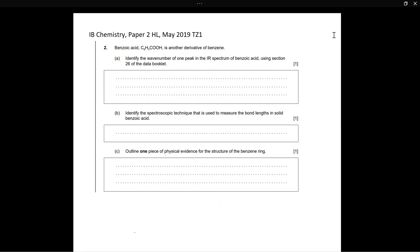So in this question, they've asked us, benzoic acid C6H5COOH is another derivative of benzene. Identify the wave number of one peak in the IR spectrum of benzoic acid using section 26 of the data booklet.